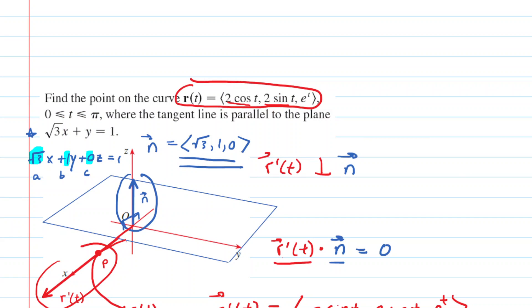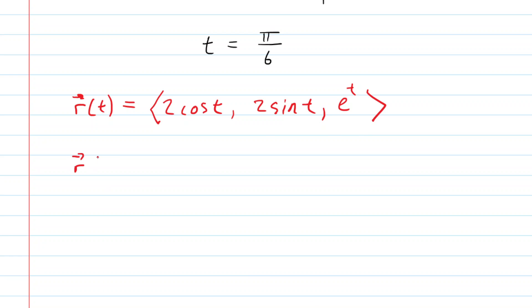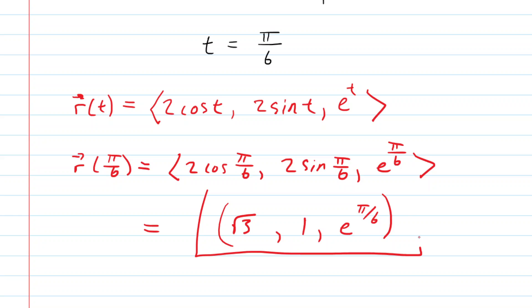The question wanted the point on the vector function r(t), not just the value of t. So we take our vector function and plug in t = π/6. We get r(π/6) = ⟨2cos(π/6), 2sin(π/6), e^(π/6)⟩. Cleaning this up: cos(π/6) = √3/2, so 2(√3/2) = √3. sin(π/6) = 1/2, so 2(1/2) = 1. And e^(π/6) cannot be simplified. Therefore, the point is (√3, 1, e^(π/6)). This is the point on the vector function whose tangent line is parallel to the given plane.